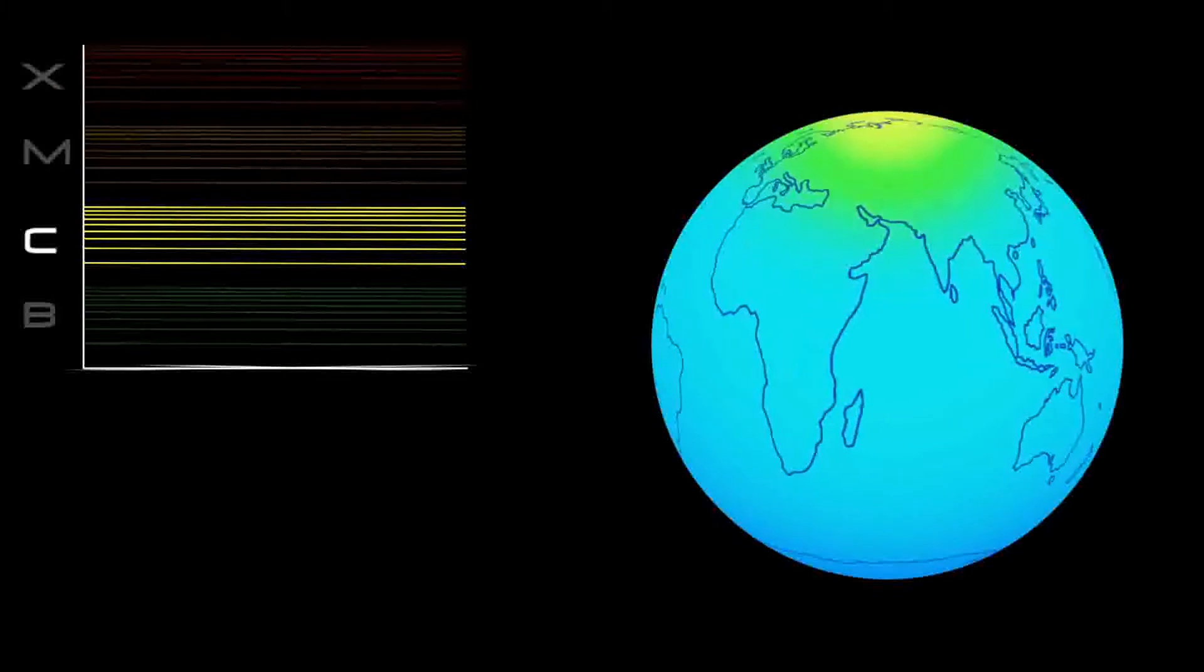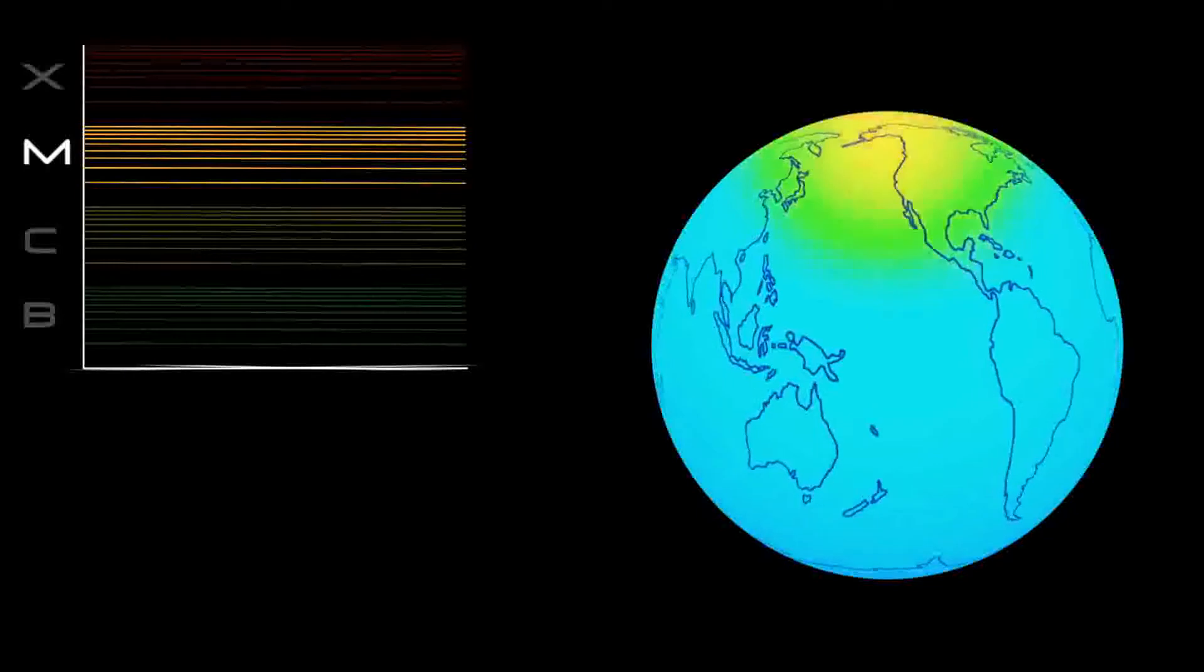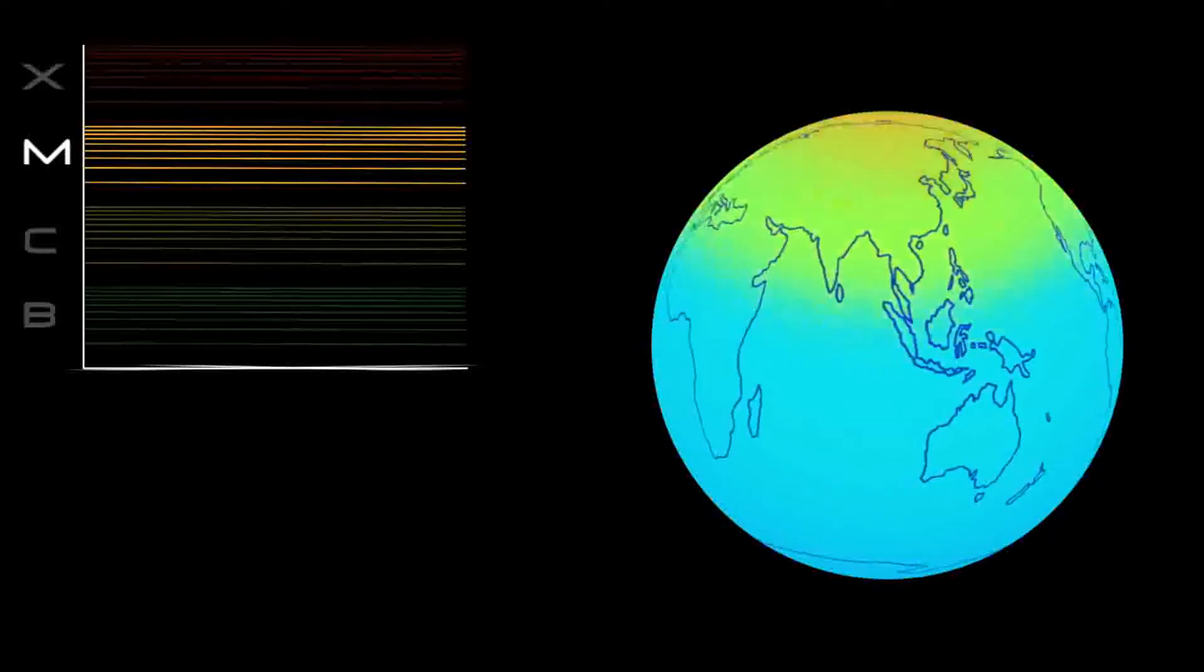C-class flares are too weak to noticeably affect Earth. M-class flares can cause brief radio blackouts at the poles and minor radiation storms that might endanger astronauts.